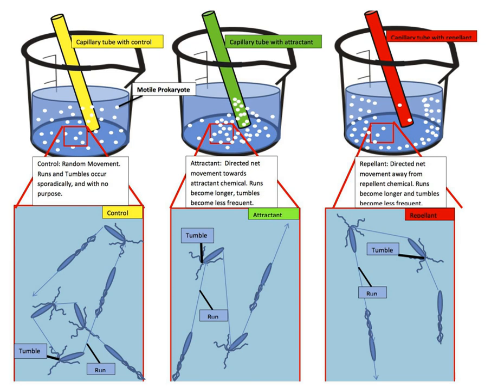In haptotaxis the gradient of the chemoattractant is expressed or bound on a surface, in contrast to the classical model of chemotaxis, in which the gradient develops in a soluble fluid.